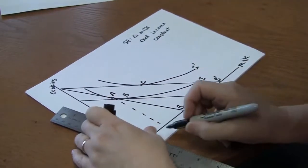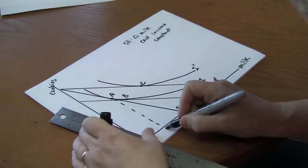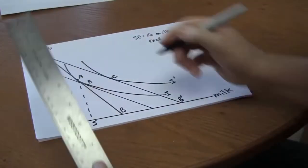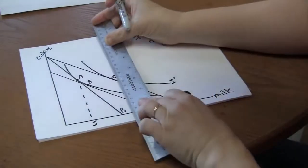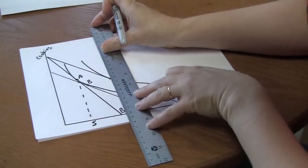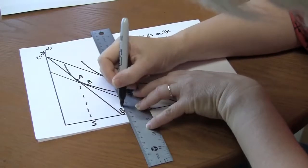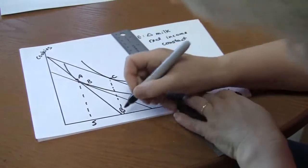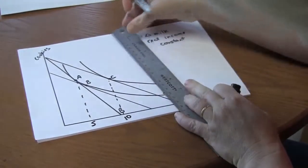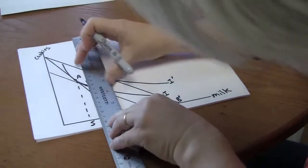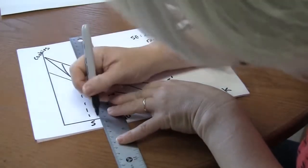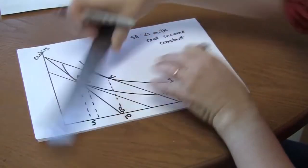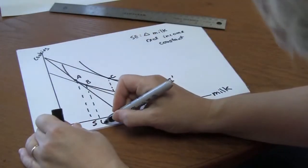The original choice might be something like five glasses of milk. I'll just put it over here so you can see it better. The new choice something like ten glasses of milk. And this intermediate point something like six glasses of milk.